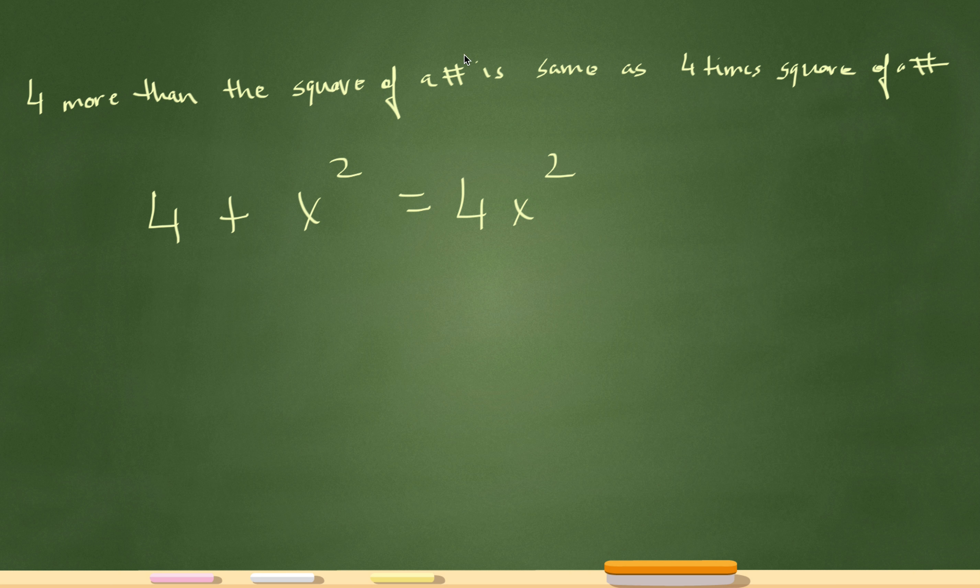It's important to know how to translate this into an equation. That's exactly what I have over here. 4 more than - so 4 more than is addition - the square of a number. The square of a number is just that number. I'm calling it x squared.